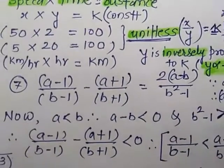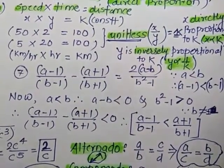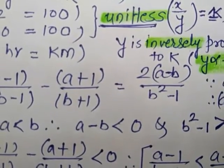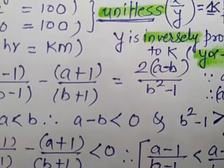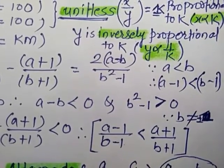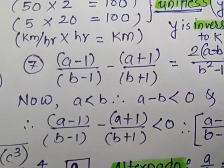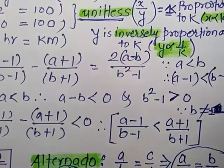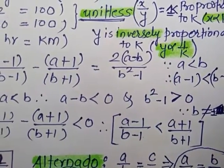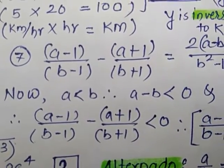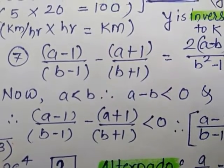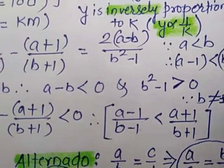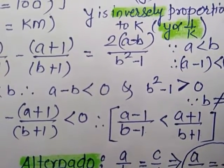In this comparison, we subtract (A−1)/(B−1) minus (A+1)/(B+1). This equation gives 2(A−B) upon (B²−1). Since A is less than B, A minus B is less than 0, and B²−1 is greater than 0 since B is not equal to ±1. Therefore (A−1)/(B−1) minus (A+1)/(B+1) is less than 0, so (A−1)/(B−1) is less than (A+1)/(B+1).